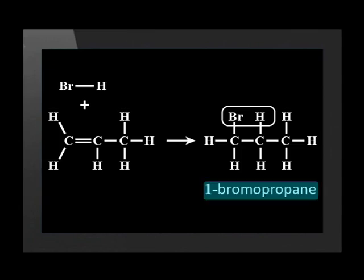In this way, we make 1-bromopropane. It turns out that we make 2-bromopropane more than 1-bromopropane when we mix hydrogen bromide with propene. We can predict which one will be made in greater amounts. This is called Markovnikov's rule.